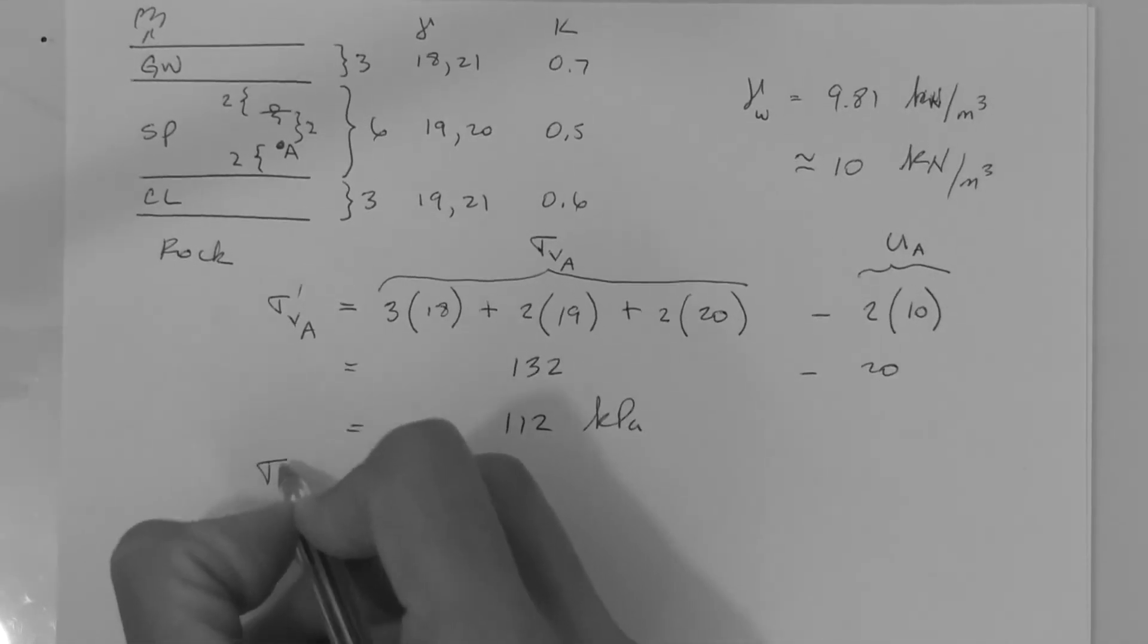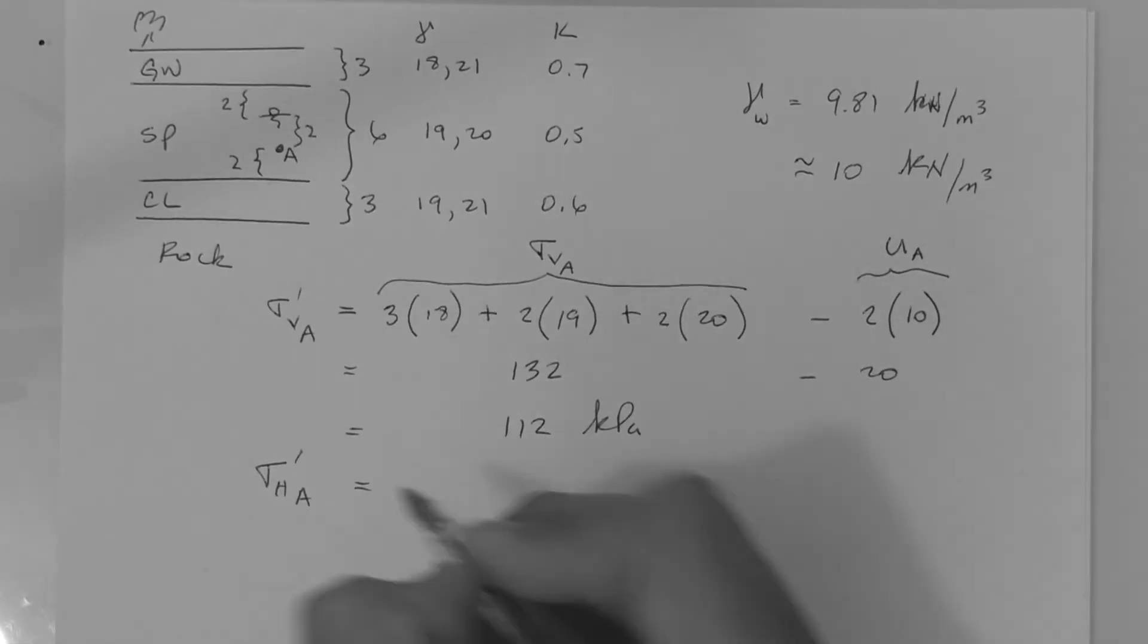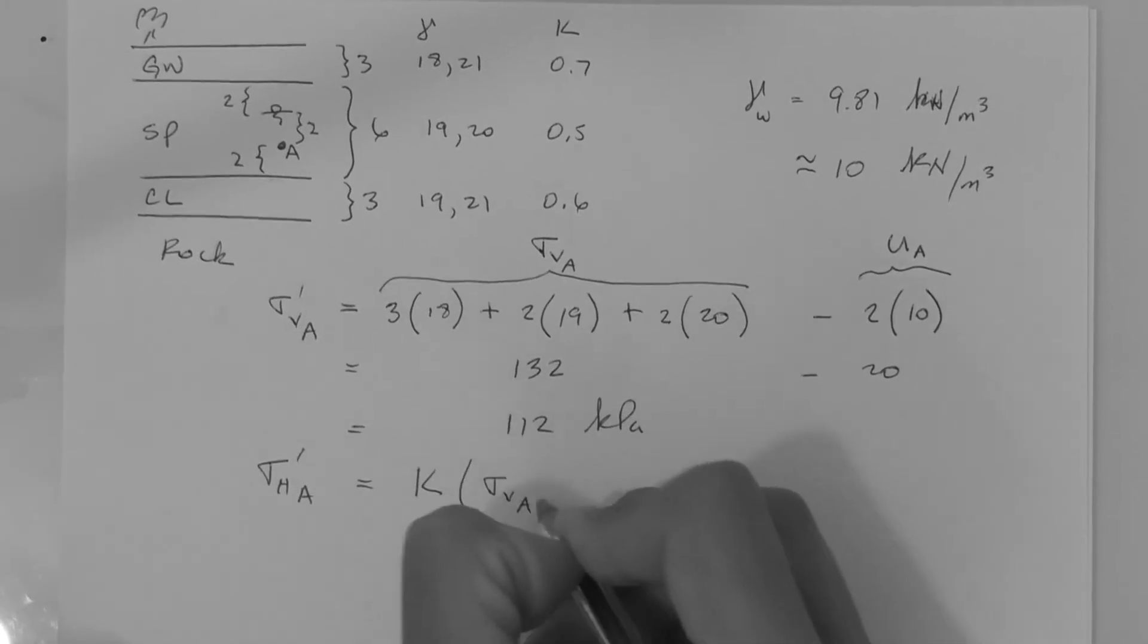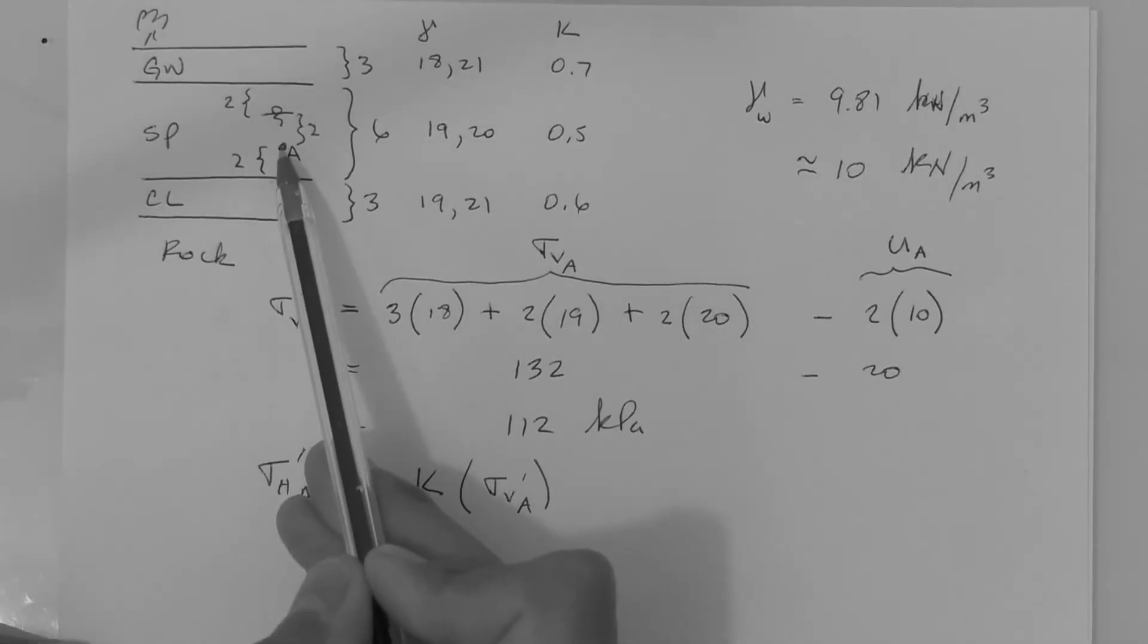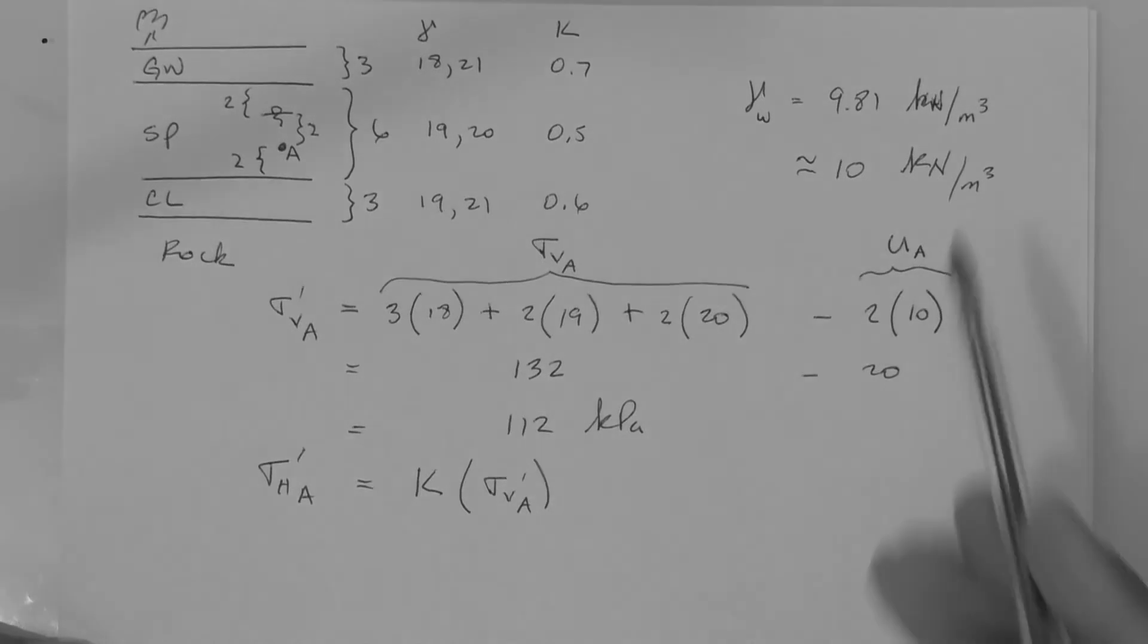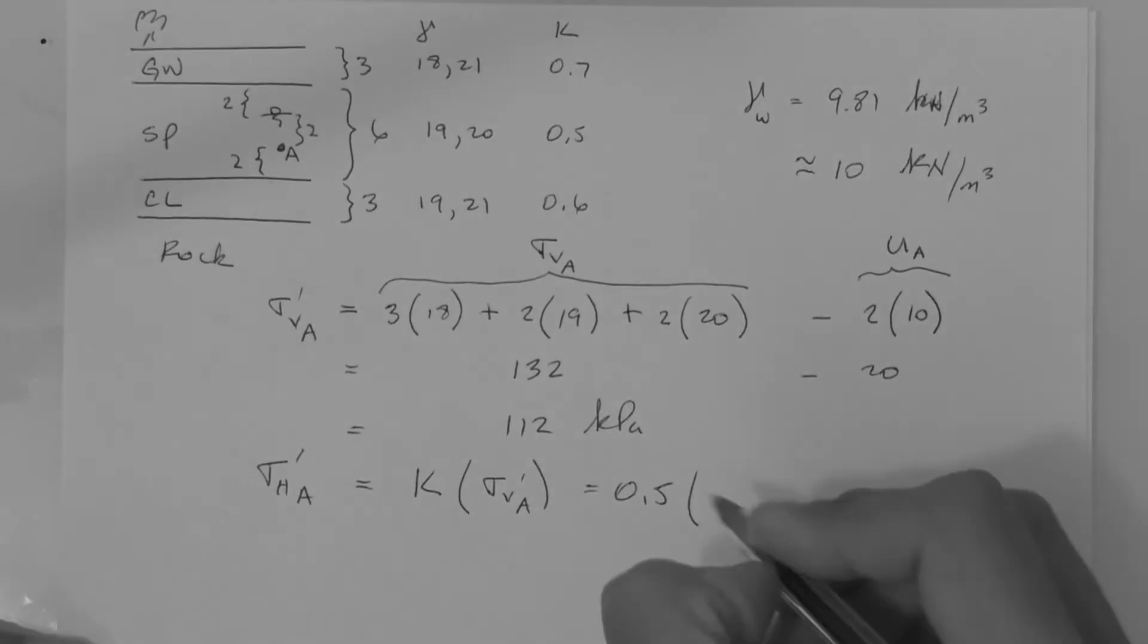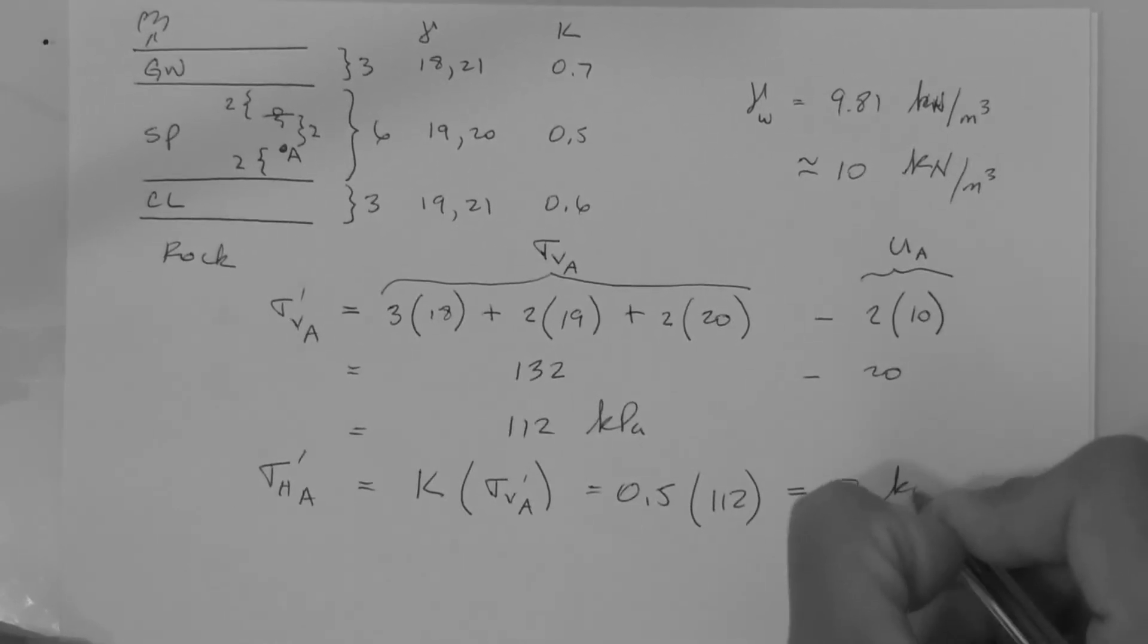The horizontal effective stress at point A is simply the lateral stress ratio times the vertical effective stress at point A. The lateral stress ratio at point A is that of the sand, because point A is in the sand, so 0.5 times 112. This gives us 56 kPa.